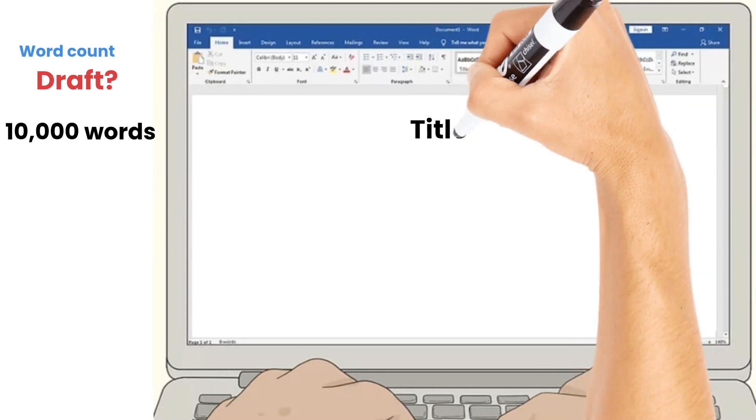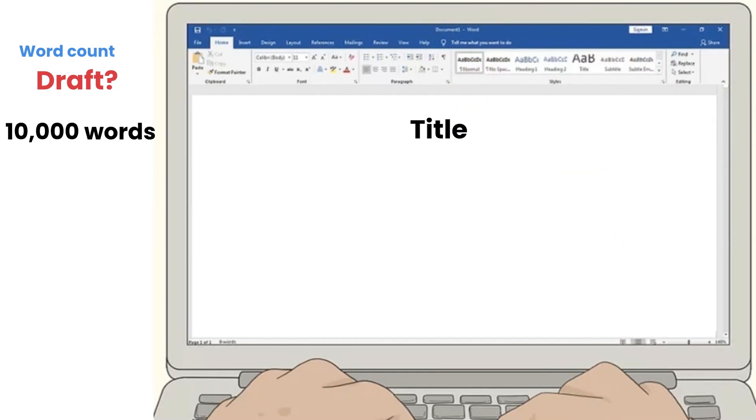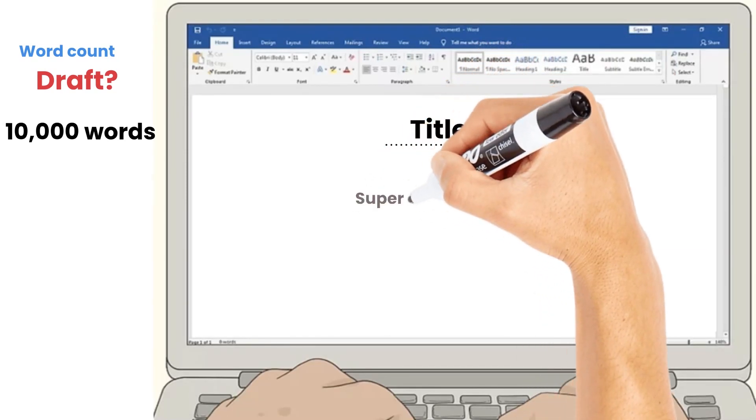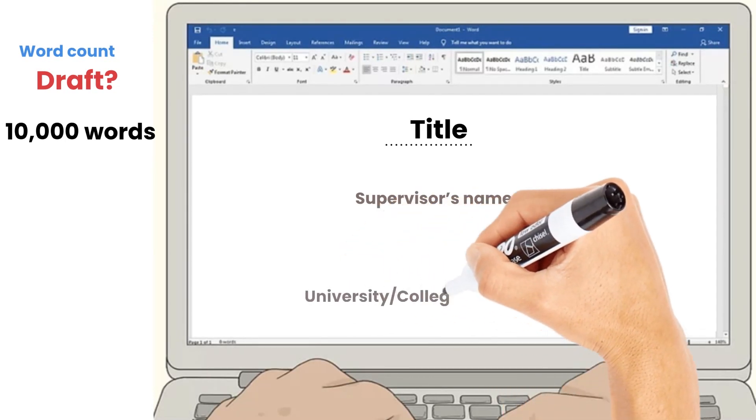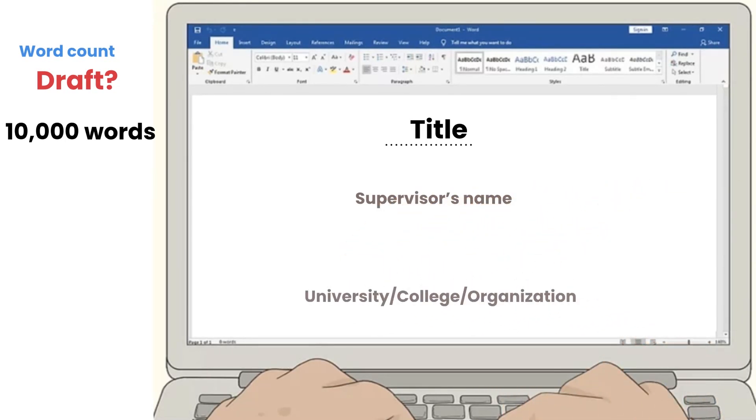As the title page is the first one in your proposal, so how you should design it? It should describe title of your proposal, your and your supervisor's name, all in a central heading, your university, college, organization name to whom you are submitting. Check from the organization to whom you are submitting. Is there any specific requirements or not?